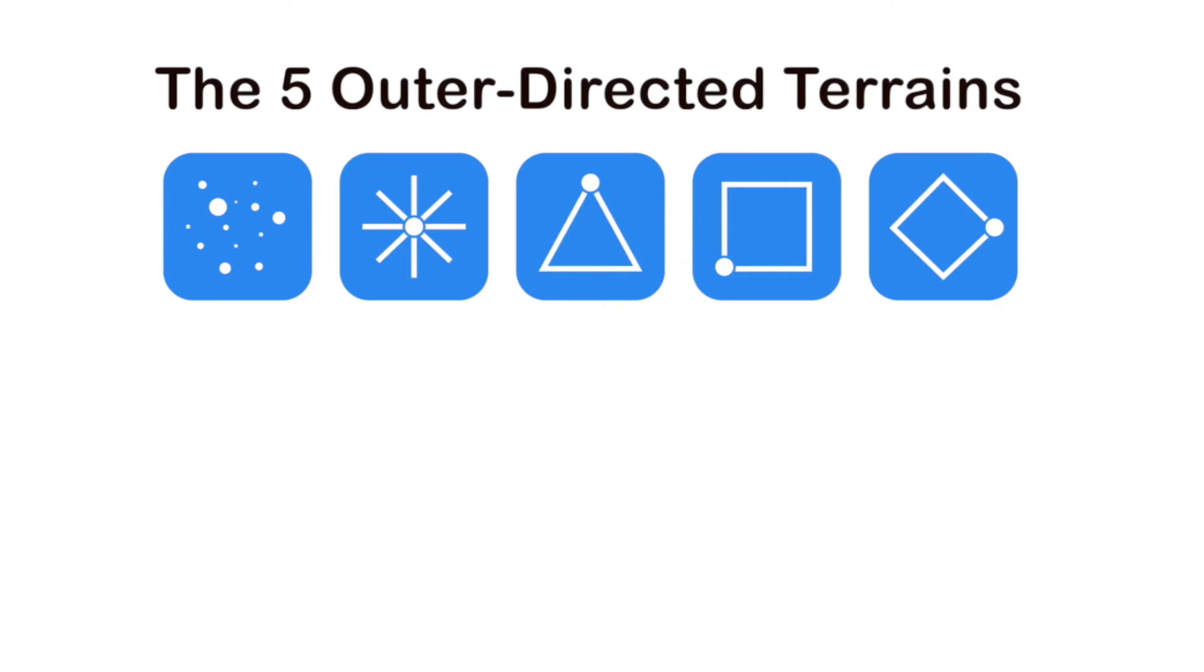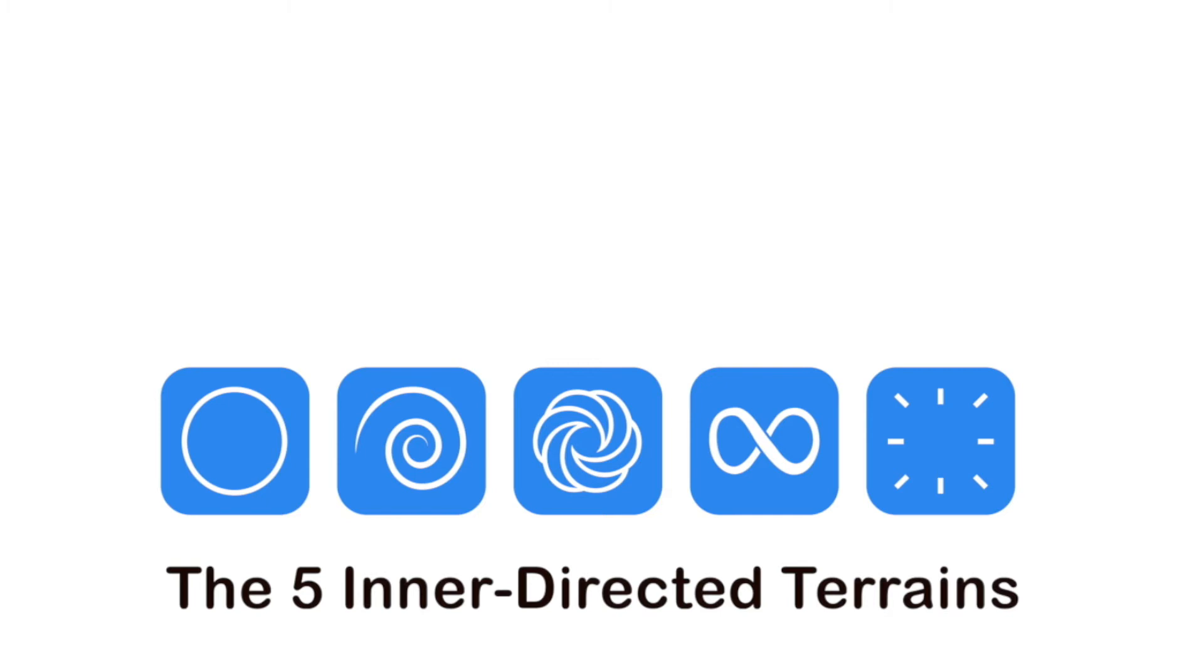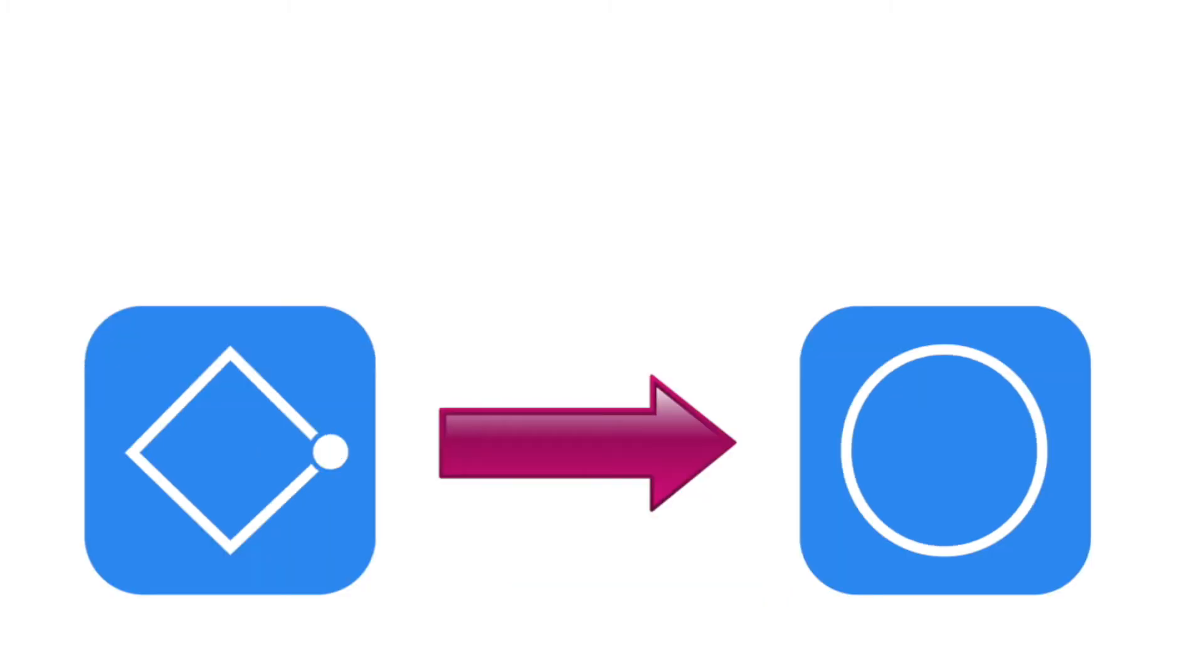And those are the five outer terrains because they're sourcing from outside of yourself. And now the next five terrains are the inner terrains where you're sourcing from within yourself. Exactly. And so the shift from the reflection-based terrain diamond to the connection-based terrain circle, essentially the shift from outer to inner, you could also think of it as a shift from fear to love or from head to heart.